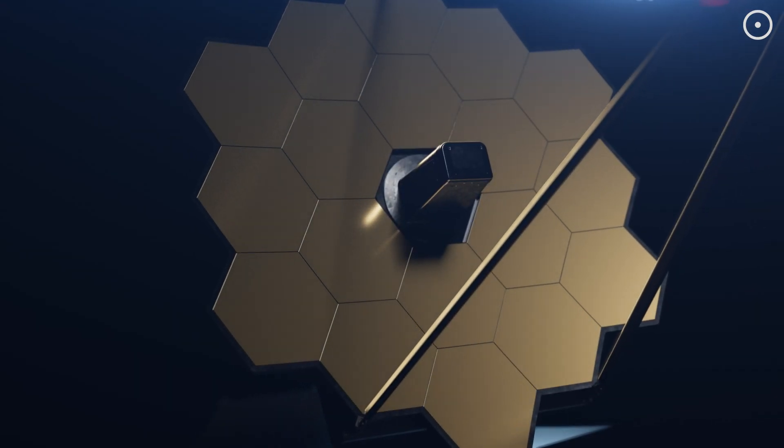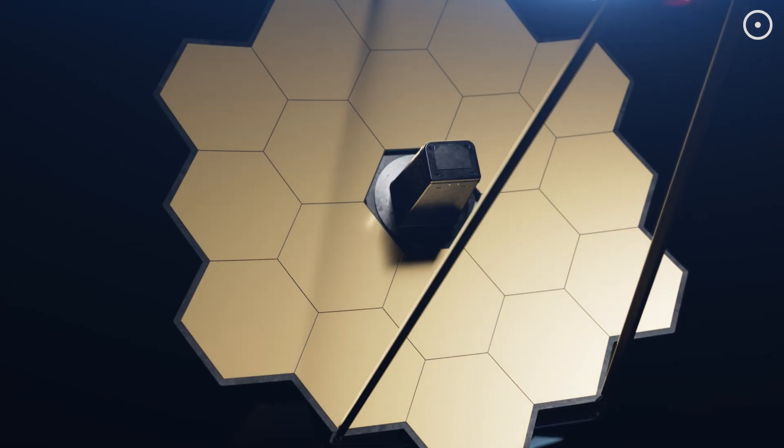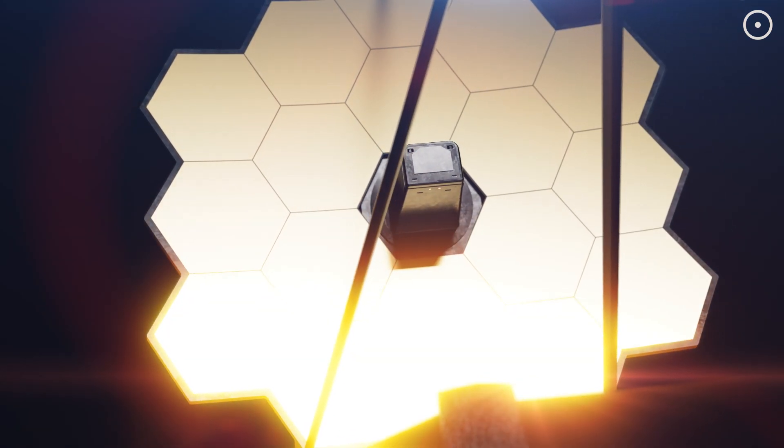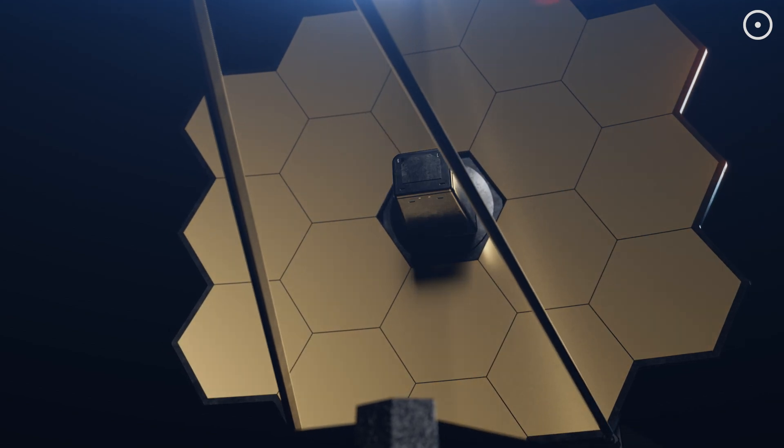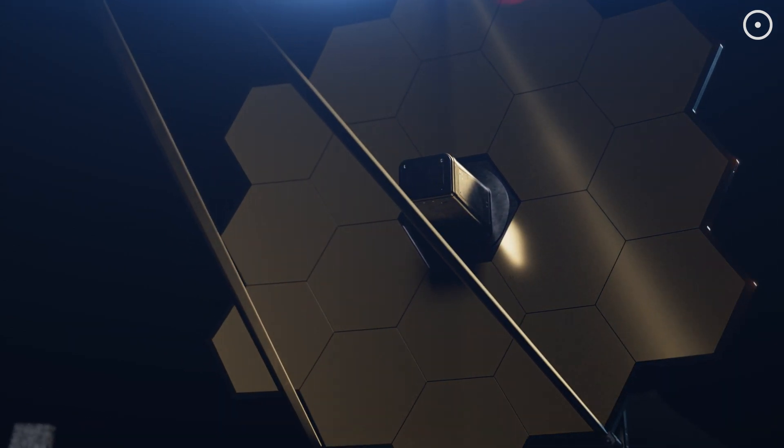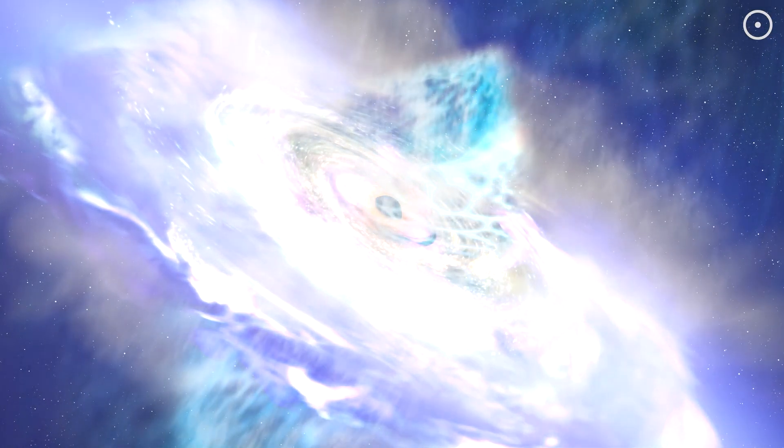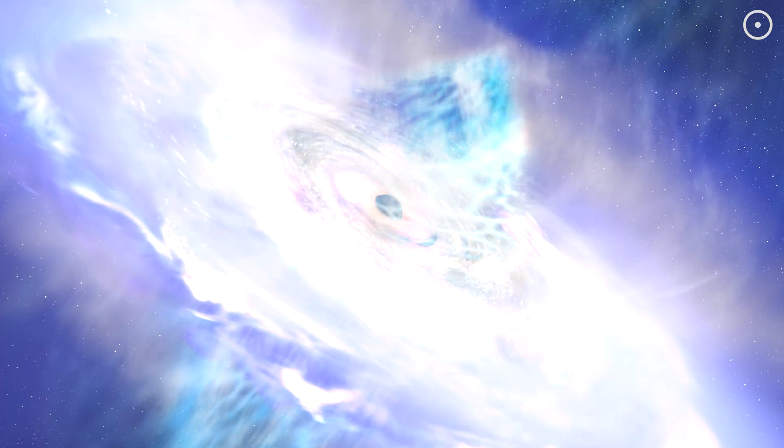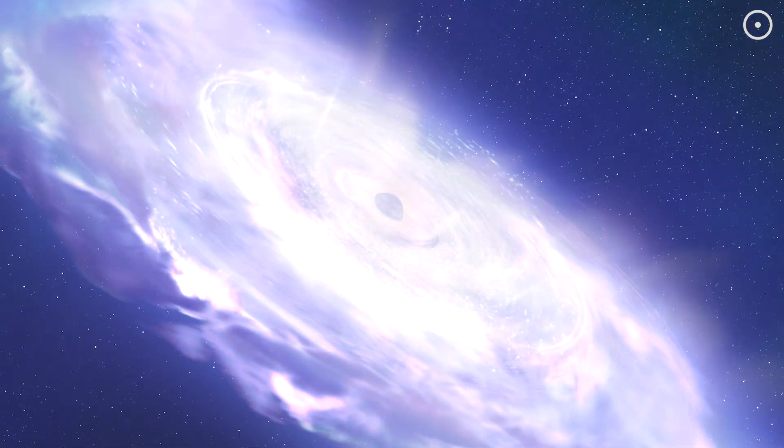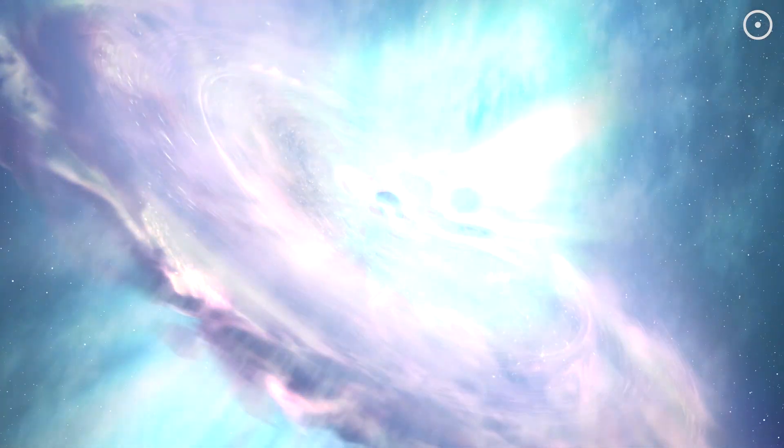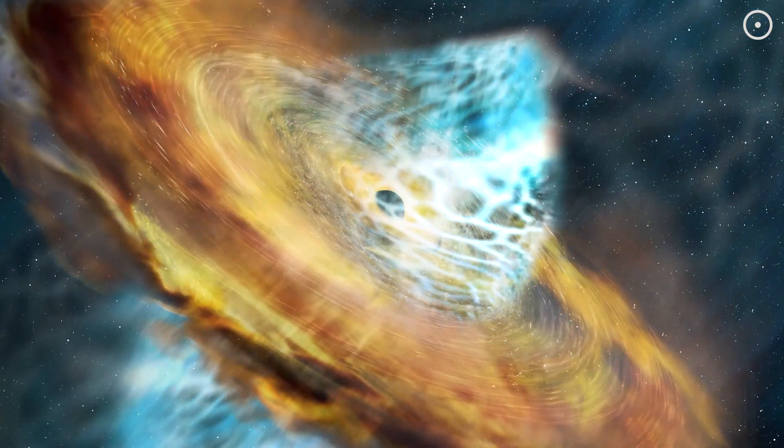But here's where Webb made an even more bizarre discovery—something that nobody expected to see. Webb has this amazing ability to look at two different types of infrared light at the same time. When these flares erupted, the shorter wavelength light would change brightness first. And then, a few seconds later, sometimes up to 40 seconds later, the longer wavelength light would follow.